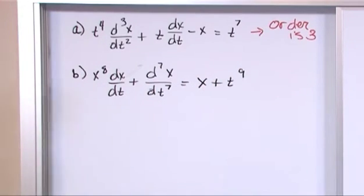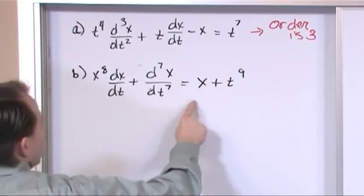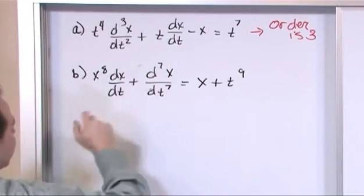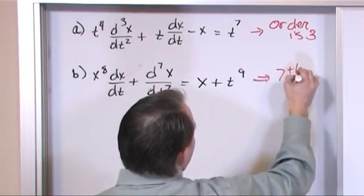So what is the order of that differential equation? So we have a first derivative here, there's no derivative over here at all, this is the seventh derivative, so this is the seventh order.